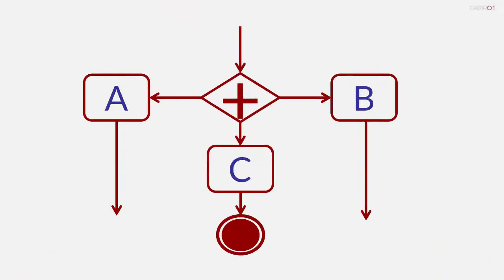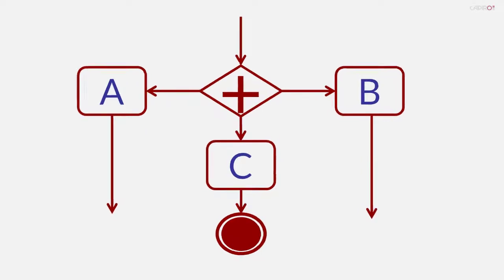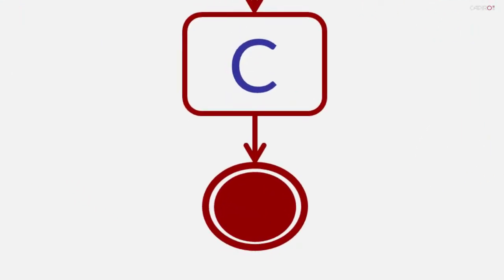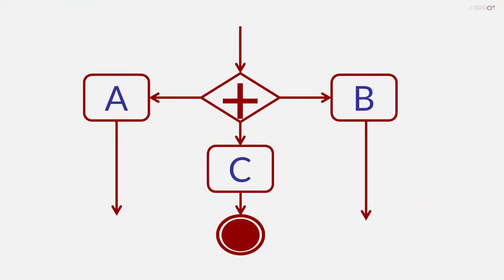In this scenario, the terminate end event coming after activity C will not only end the flow coming out of C, but will also cause the other two flows to immediately terminate, whether or not they had completed. All three flows exiting the activities will immediately terminate, as will any other activities that may be happening elsewhere in the process at the time the terminate was reached.